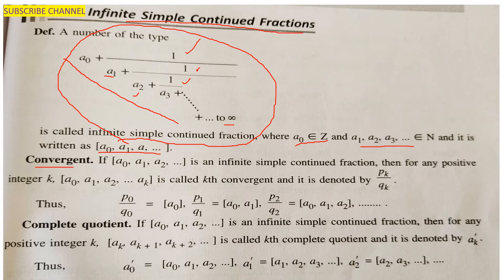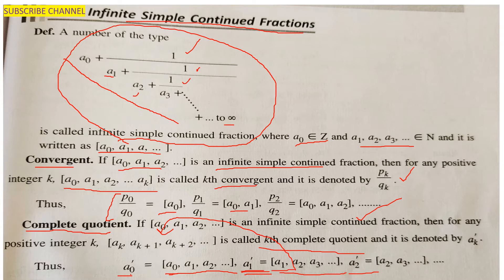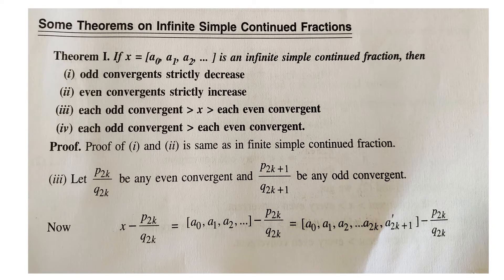We have already defined convergents in the previous lecture. For [a₀; a₁, a₂, ...] as an infinite simple continued fraction, for any positive integer k, the kth convergent is denoted as pₖ/qₖ. So p₀/q₀ equals a₀, and p₁/q₁ equals [a₀; a₁], and so on. Similarly, we define complete quotients: the kth complete quotient starts from its subscript index aₖ.